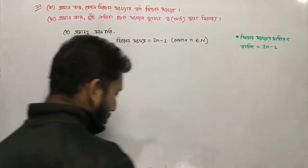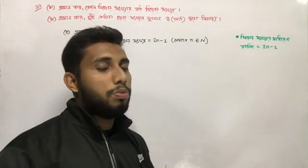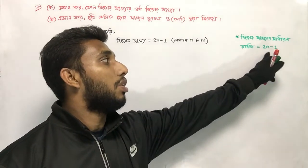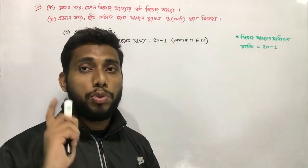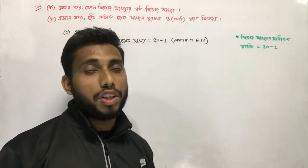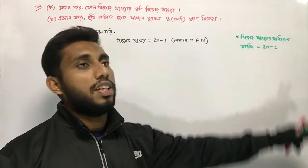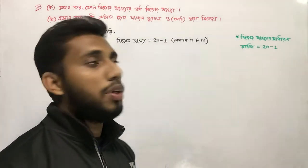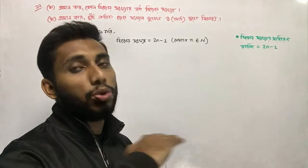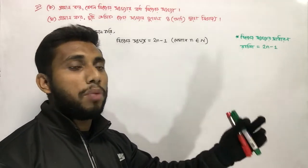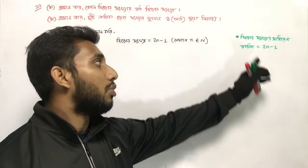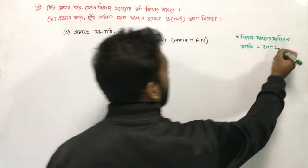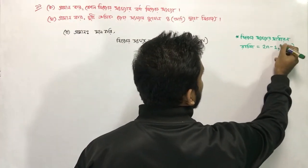2n minus 1. So we have 2n minus 1, and 3n minus 1, and again 2n minus 1.